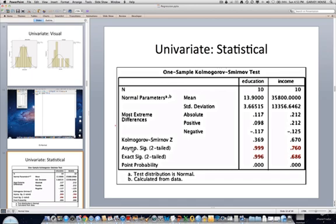And in fact, we see that the asymptotic significance, which is another word for a p-value, in both of these cases, education and income, they're greater than 0.05. Therefore, we can conclude that there's no difference in the sample distributions as compared to a theoretical normal distribution, which is another way of saying they're normally distributed.